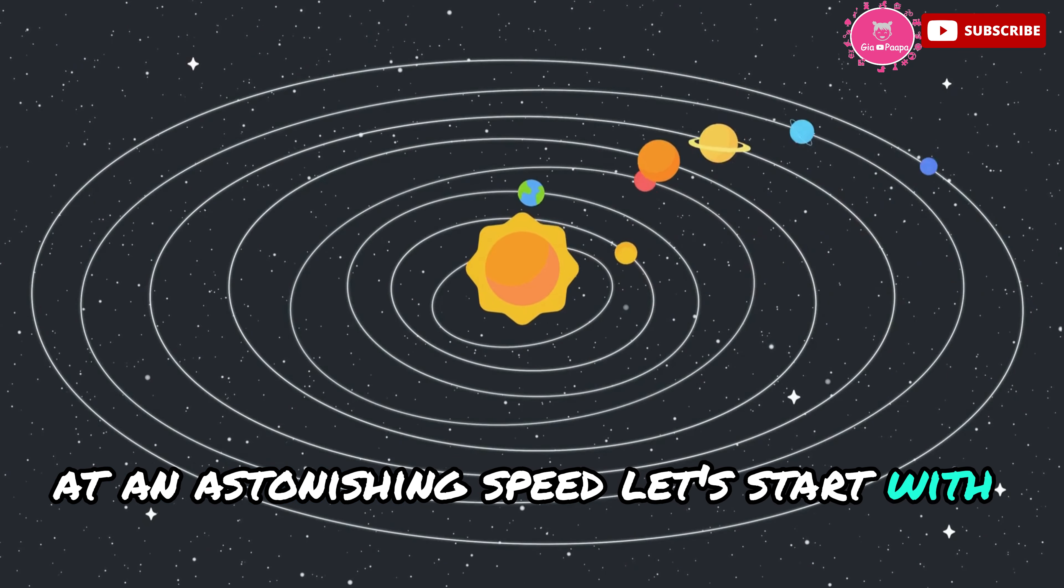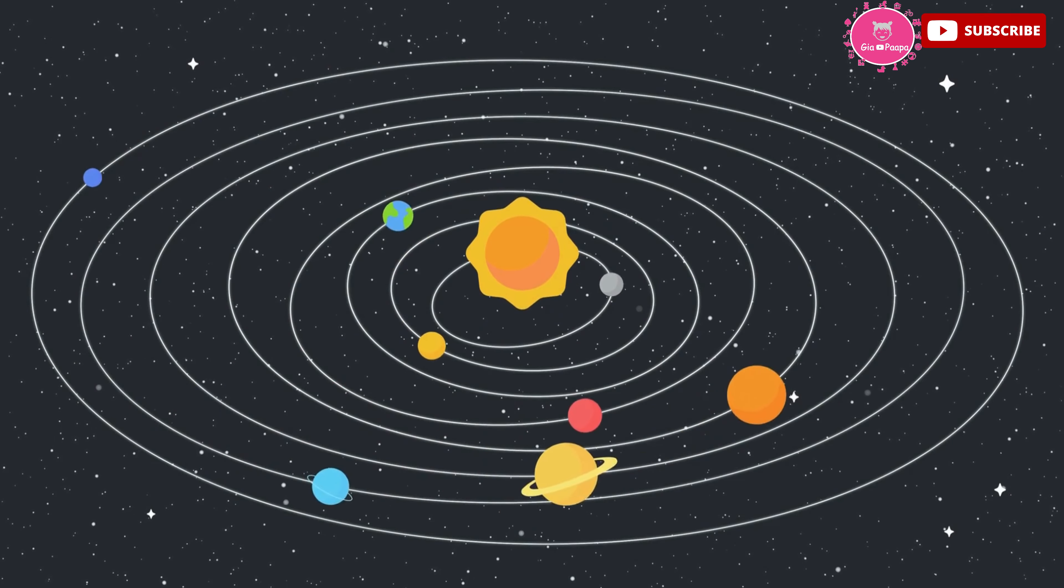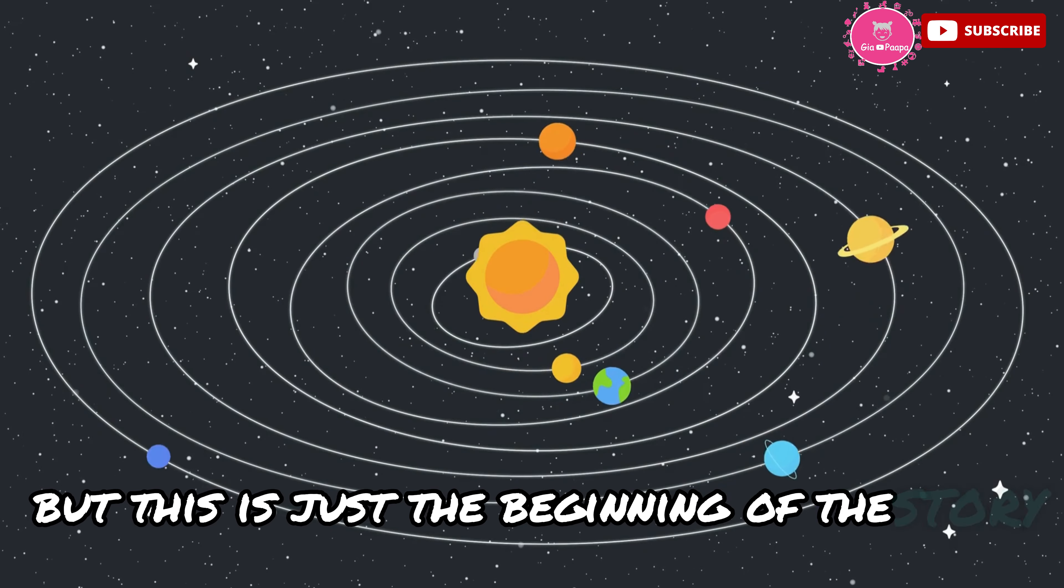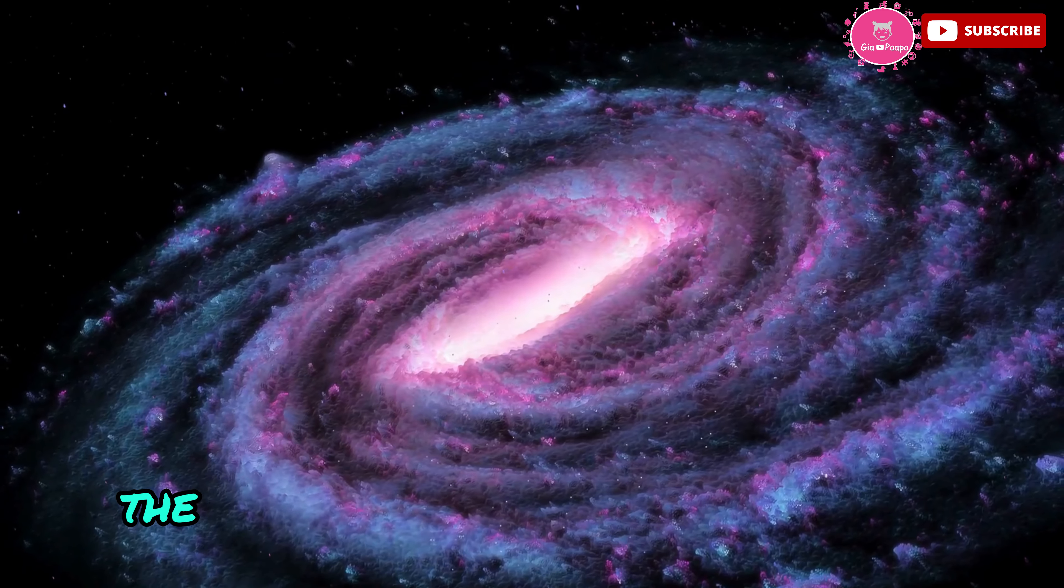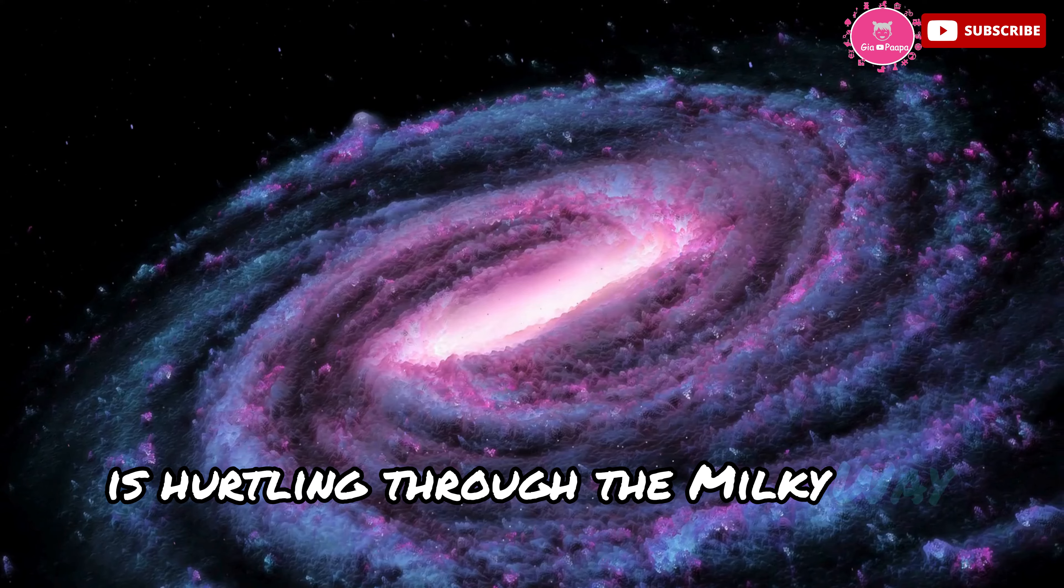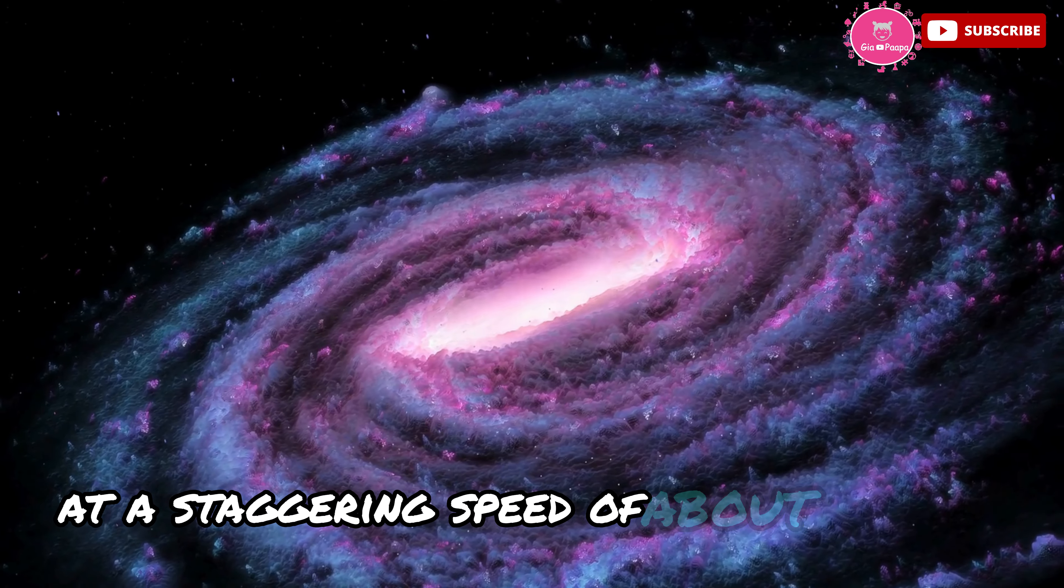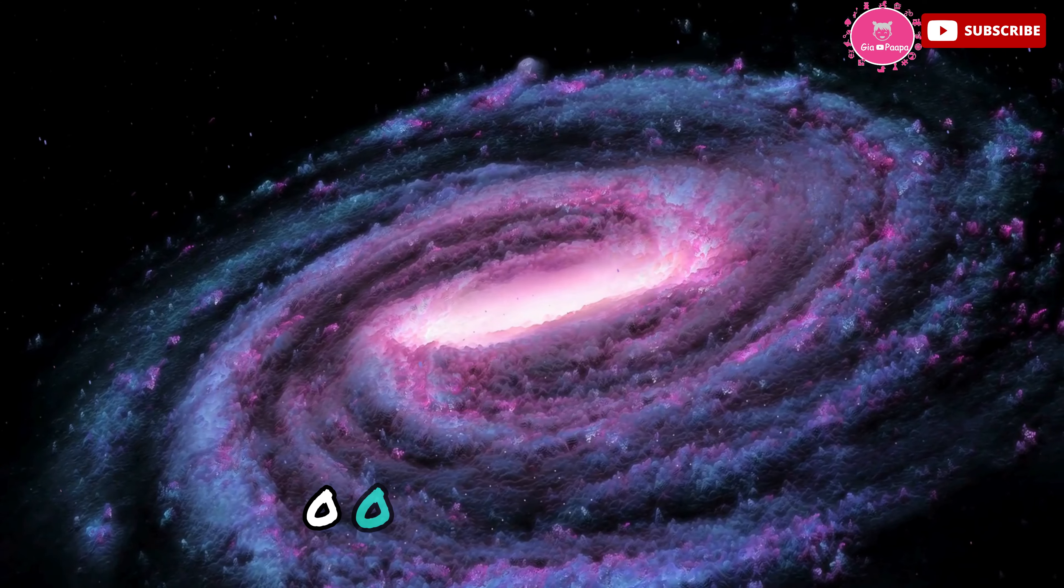Let's start with what we know. Planets revolve around the sun in elliptical orbits. But this is just the beginning of the story. Our solar system isn't just sitting still. The sun, along with all its planets, is hurtling through the Milky Way galaxy at a staggering speed of about 828,000 km/h or 514,000 mph.